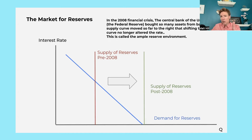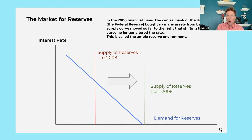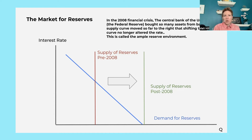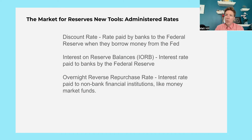After 2008, things are different. All those excess reserves mean the supply of reserves has shifted all the way to the right. When the supply is all the way over there, it's really hard to get back up on the downward-sloping part of the demand curve — you're basically on the flat part — and it's really hard to move the interest rate. When the Federal Reserve went to raise rates after the great financial crisis, they realized their old tools were not really working because of those excess reserves. So the Fed had to use some new tools.